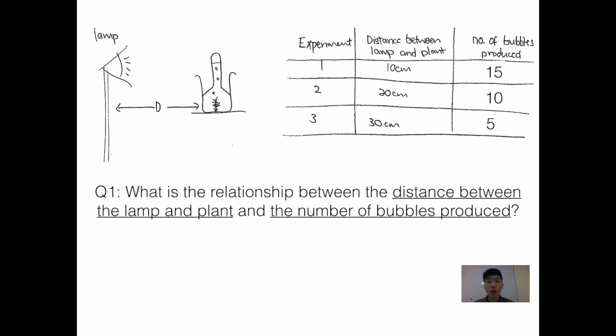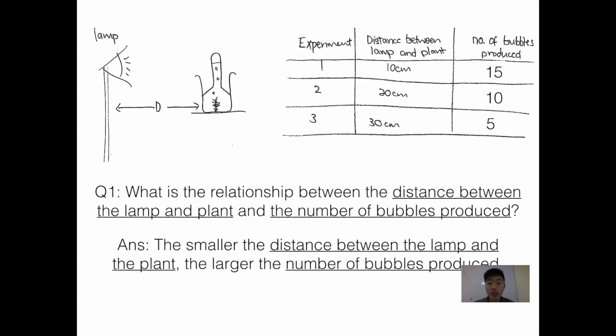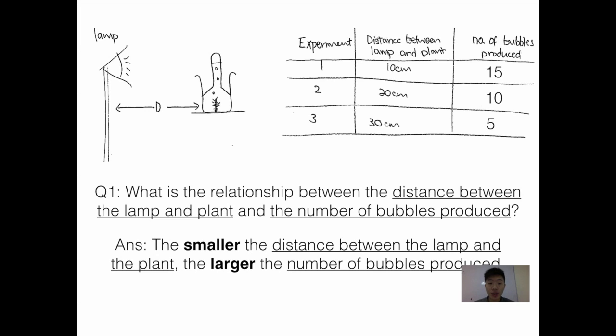Simply taking these two variables and putting them into the answer, I would get: the smaller the distance between the lamp and the plant, the larger the number of bubbles produced. I would like to bring your attention to the comparison terms that I have used in the answer, namely smaller and larger. Taking the two variables and the comparison terms, we can form the answer easily.